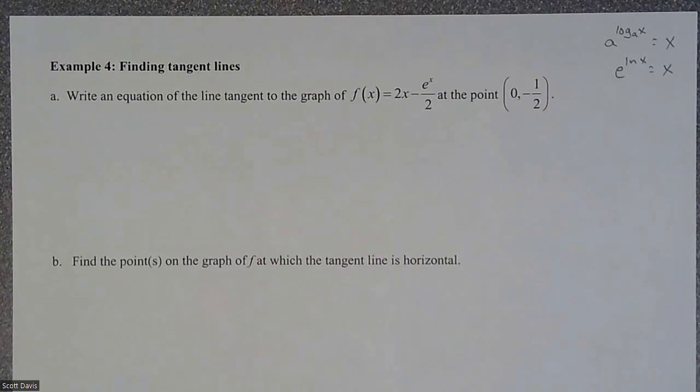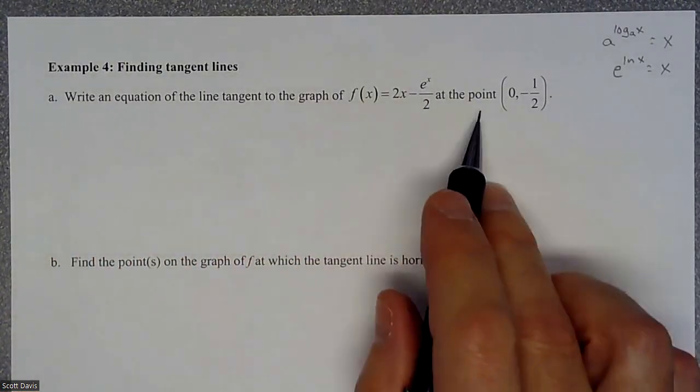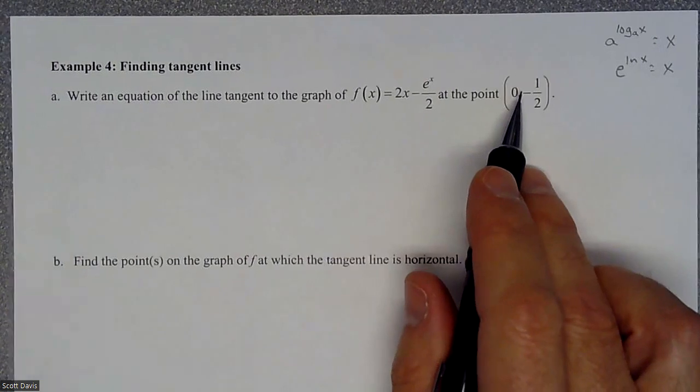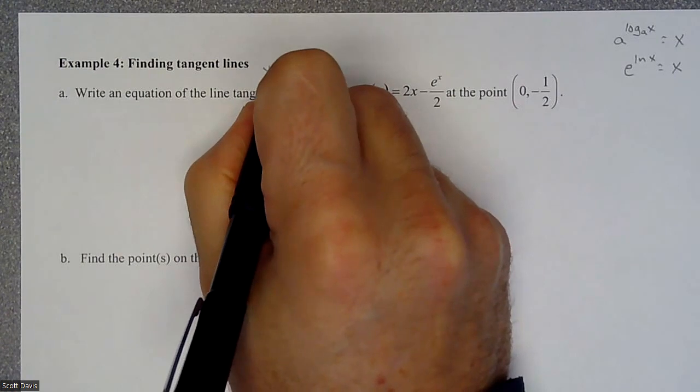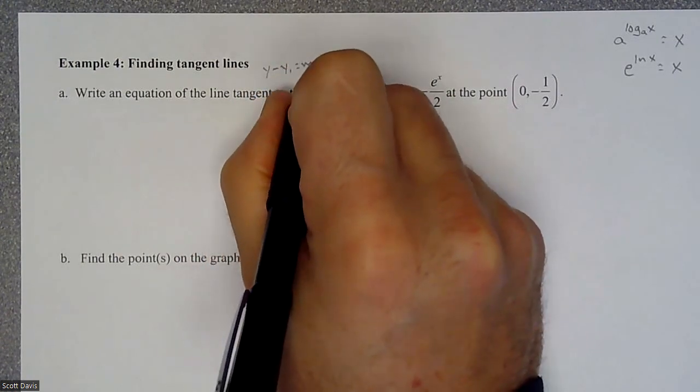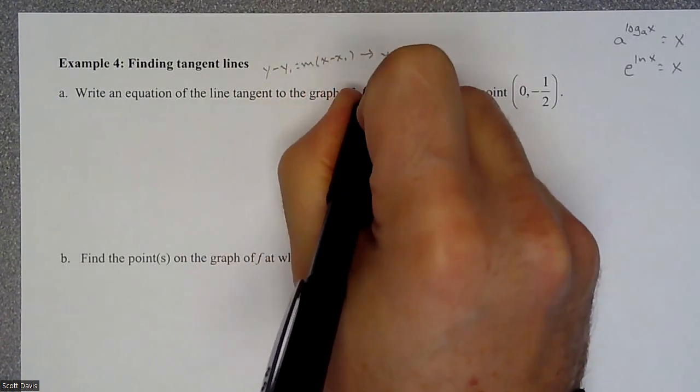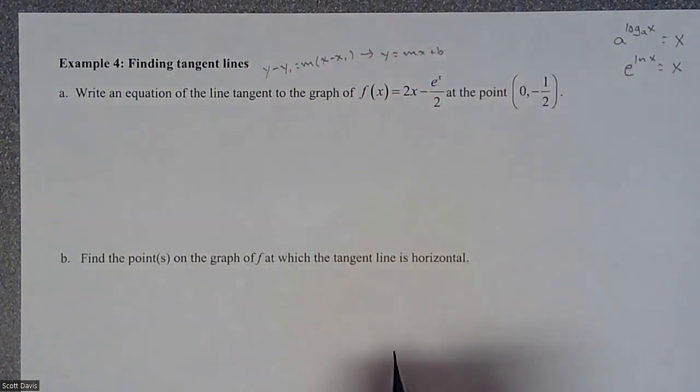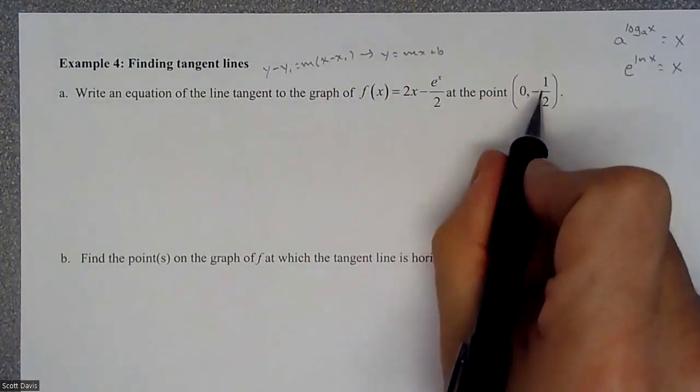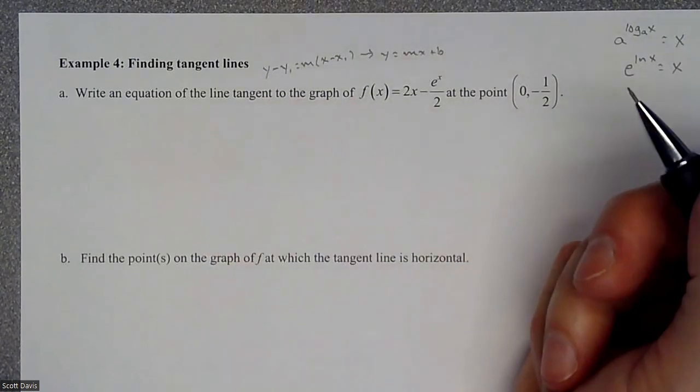So on this problem, we are going to try to find, write an equation in the tangent line to this graph at this particular point. So a tangent line is, we eventually are going to do y minus y1 equals m times x minus x1 to turn it into y equals mx plus b. That's our goal. So what we have is, we have a coordinate, so we have an x1 and a y1, but we don't have a slope.